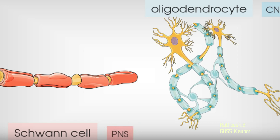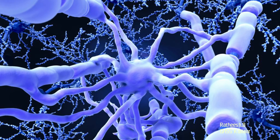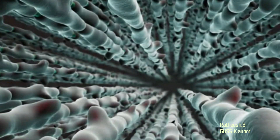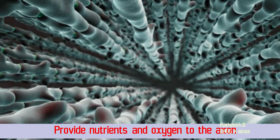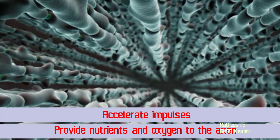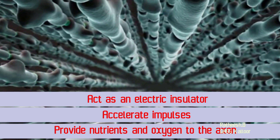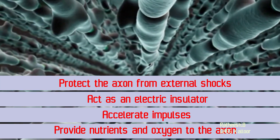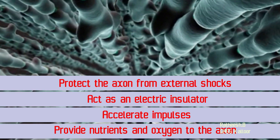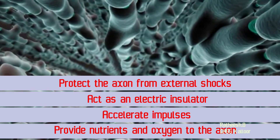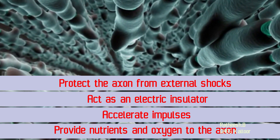The myelin sheath has a shiny white color, so the path of nerve cells with myelin sheath will appear white. The major functions of myelin sheath are: provide nutrients and oxygen to the axon, accelerate impulses, act as an electrical insulator, and protect the axon from external shocks. This is very important, so give importance to the functions of myelin sheath.